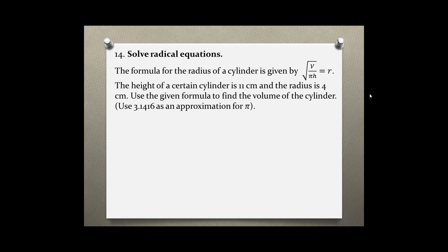Problem number 14. Solve radical equations. The formula for the radius of a cylinder is given by the square root of v over pi h equals r.